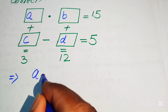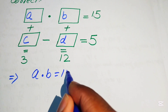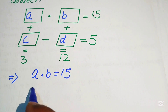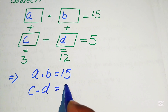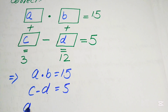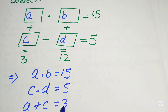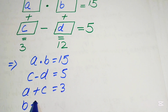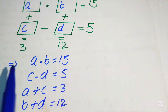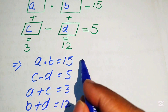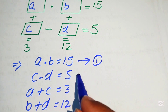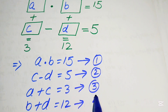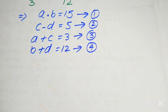From the diagram: A multiplied by B equals 15 — this is equation 1. C minus D equals 5 — equation 2. A plus C equals 3 — equation 3. And B plus D equals 12 — equation 4. So we have these four equations obtained from our given data.